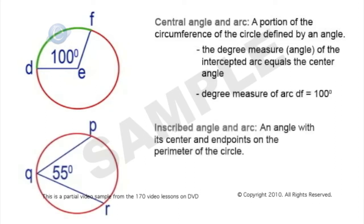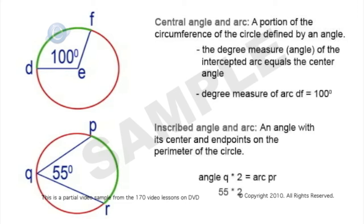Now we have an inscribed angle and arc — an angle with its center at the endpoints of the arc on the circumference of the circle. The angle of the intercepted arc equals twice the inscribed angle. Our arc here is arc pr, but rather than being created by an angle at the center of the circle, it's created by an angle on the other side of the circle. So if angle q is 55 degrees, the degree measure of arc pr is double that, or 110 degrees.